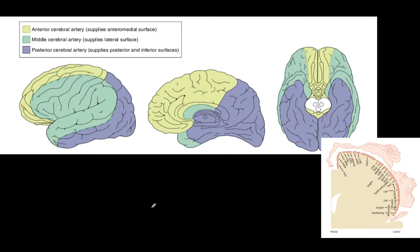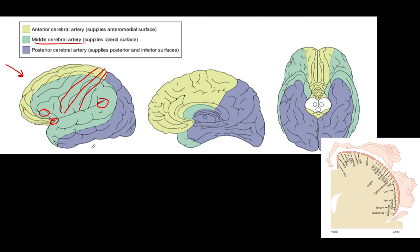Here is a lateral view of our brain — a picture from First Aid. You can see the middle cerebral artery is really supplying a lot of the lateral side. Broca's area and Wernicke's area would both be involved. As the motor homunculus crosses into the MCA area, it would all be affected there. The sensory cortex right behind the motor cortex would also be affected.